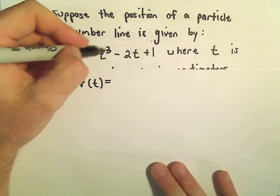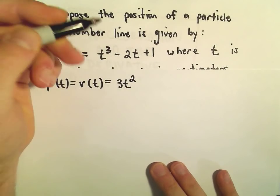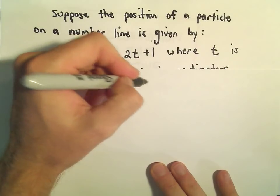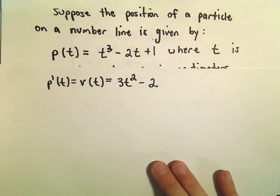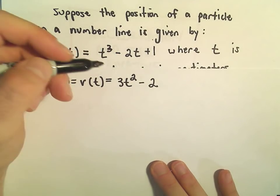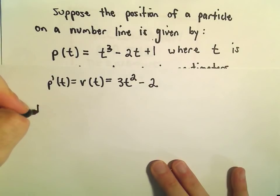So if we take the derivative of t to the third, we'll get 3t squared. The derivative of negative 2t will just be negative 2. And then the constant plus 1, when we take the derivative of that, we'll just get 0. But again, this is the equation that tells us velocity.